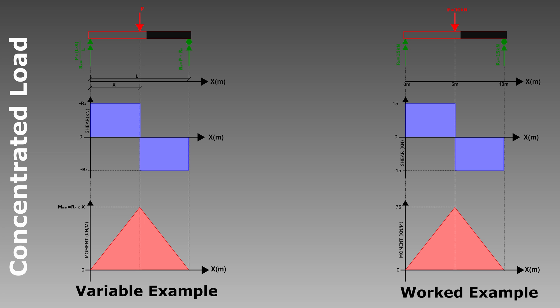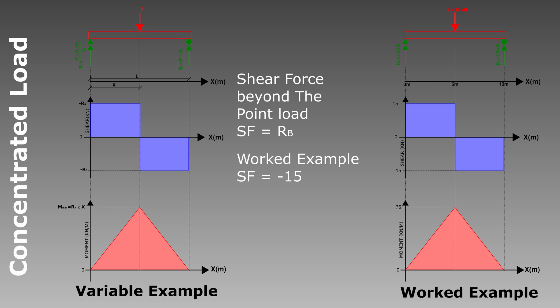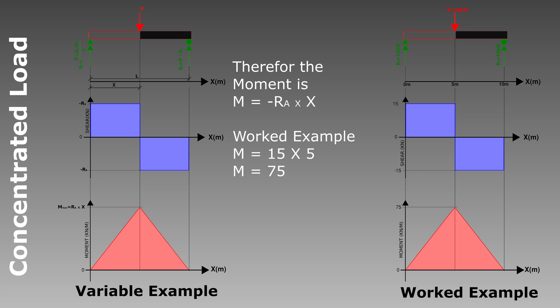Moving past the point load, we now have both RA and P in our section cut, so the shear force becomes RA minus P. That again gives a straight line across until we reach the reaction on the far side. As a sanity check, the shear force on that side must equal the reaction force RB, which confirms all net vertical forces sum to zero. Now let's look at the bending moment — taking the same section cut at the concentrated point load and looking at the forces to the left.